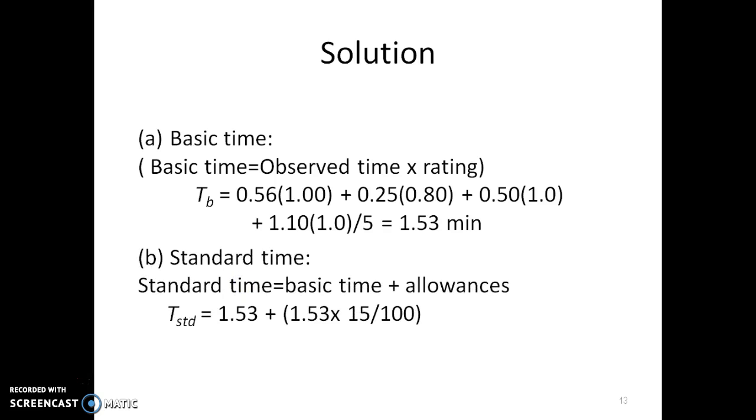Standard time is nothing but basic time added with allowances. These allowances are percentages of basic time. So 1.53 times 15 by 100 is calculated and then it is added with the basic time 1.53 to get the standard time as 1.76 minutes.